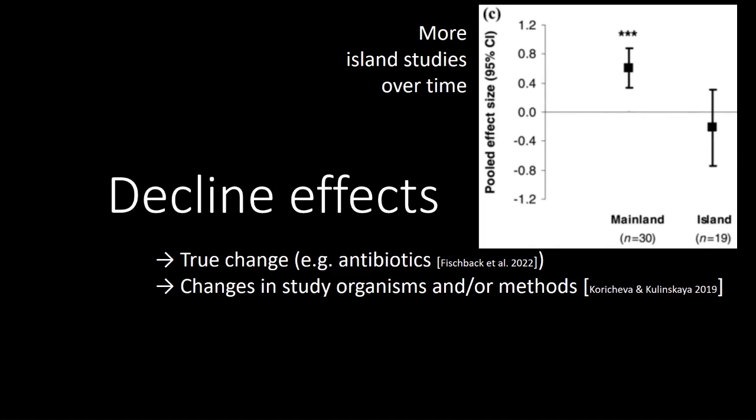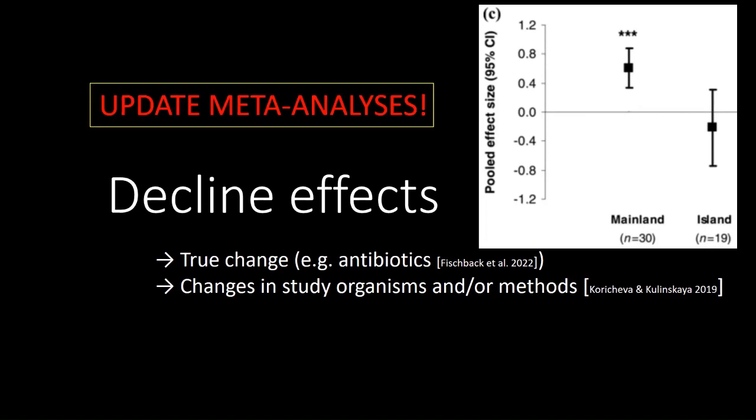What we should do is combine all of it to see if there is evidence across populations, and if it's really true that in island populations this hypothesis doesn't apply, then perhaps present results separated by population type. This is a reminder to update meta-analyses — something that isn't always accepted by journals or the community, but I think every meta-analysis should be updated after certain years, because there is a lot to find.